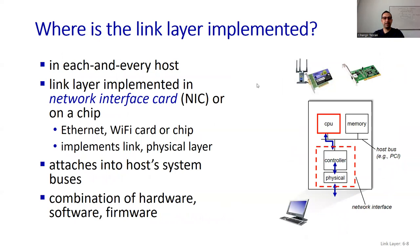Where is the link layer implemented? We are going to talk about the NIC — network interface card. In each and every host, the link layer must be implemented. The link layer is implemented in the network interface card or on a chip, such as an Ethernet or Wi-Fi card or chip. On laptops we have both; on desktops generally just Ethernet. It implements the link and physical layers, attaches into the host system bus, and is a combination of hardware, software, and firmware.